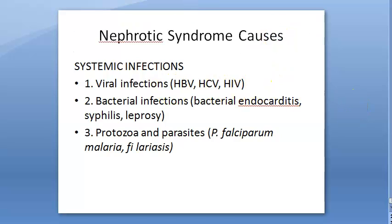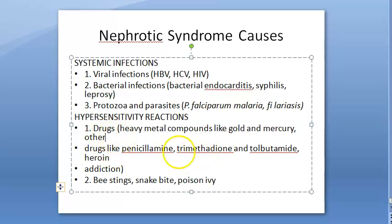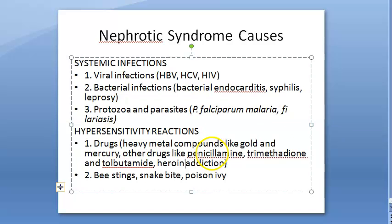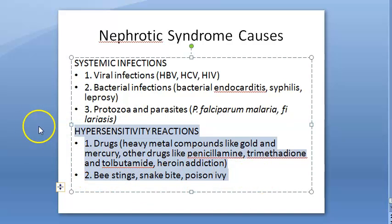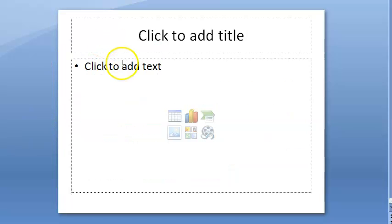Systemic infections can be a cause. The person may have hypersensitivity to drugs like heavy metal compounds such as gold and mercury. There may be heroin addiction, bee stings, snake bites, or poisons — all of these can cause nephrotic syndrome.